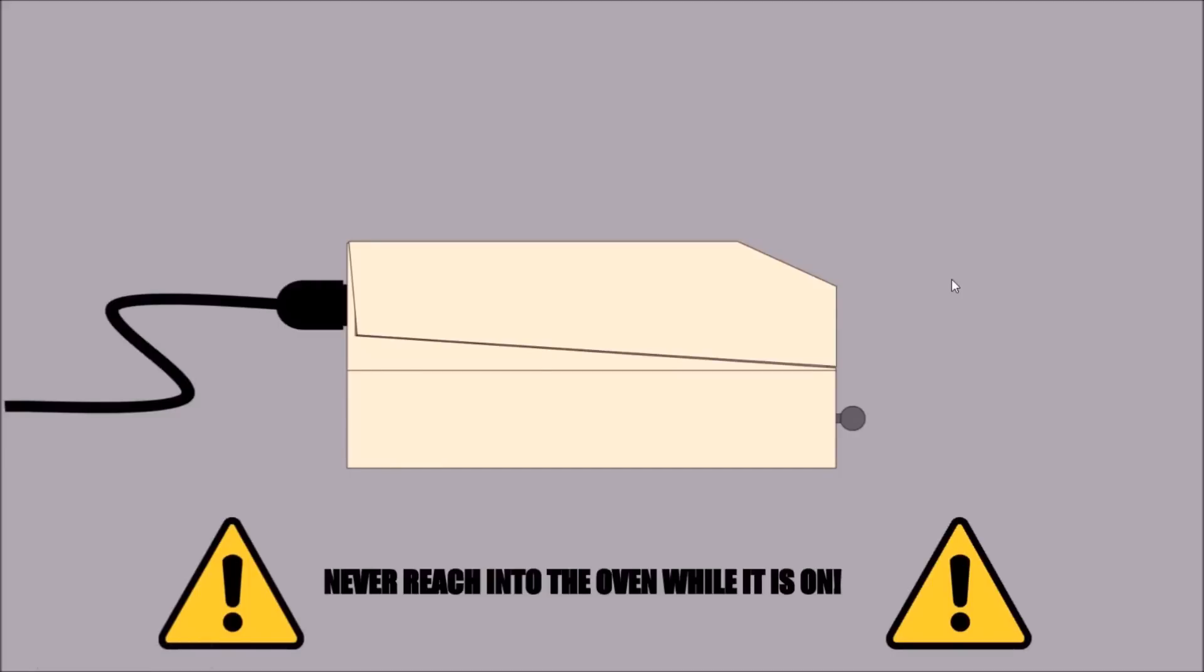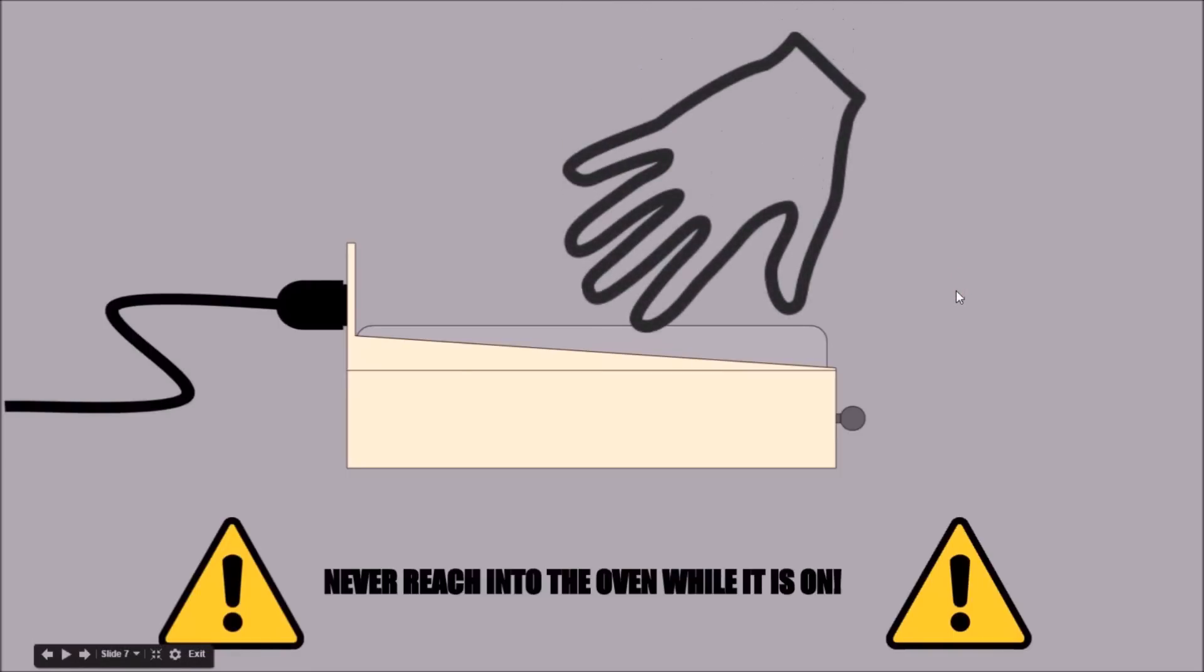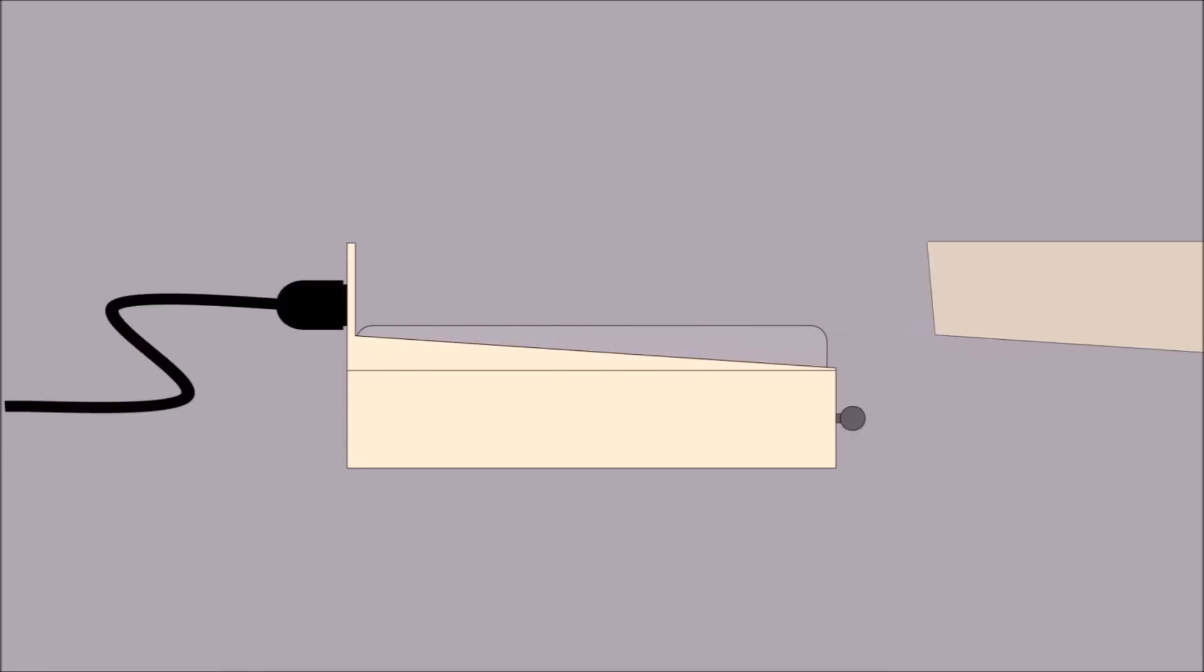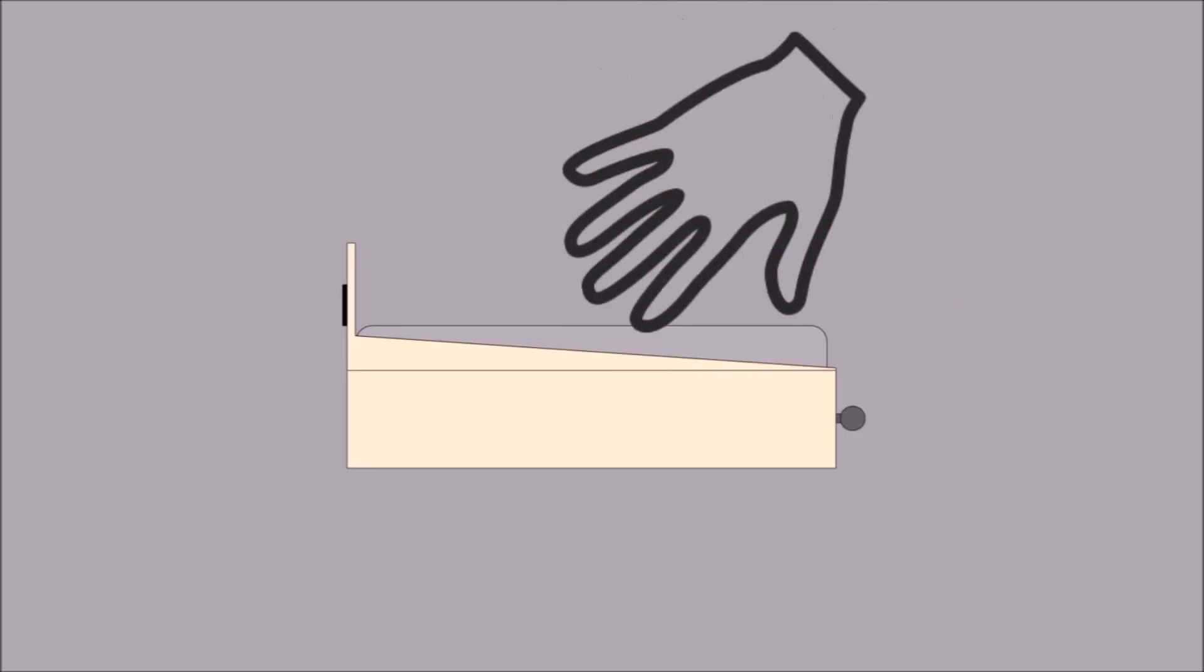Mains voltage can kill you. Never reach inside the oven while you have the power cable connected. Whenever you start working on the oven, flip the switch off and remove the cable. Wait a few moments and then you can start working. When you want to turn the oven back on, plug the cable back in and flip the switch. But again, never reach inside the oven while the power cable is connected.